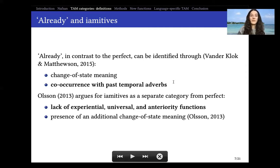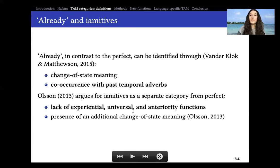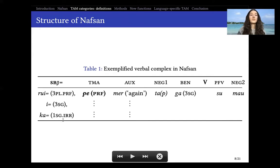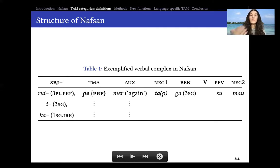What I have highlighted in bold are basically the things we're going to focus on: temporal adverbs and functions that might be decisive for whether we decide something is perfect, already, or a yamitive. To give an idea of how Nafsan's verbal complex or predicate structure looks: we have subject proclitics — subject number and person marking — which usually also carry some TAM meanings. There are subject markers that contain a kind of perfect meaning, general subject proclitics which do not include TAM, and irrealis versions of these proclitics. The TAM marker P-perfect is the one we'll be focusing on in this talk.